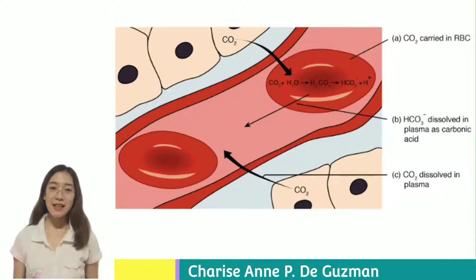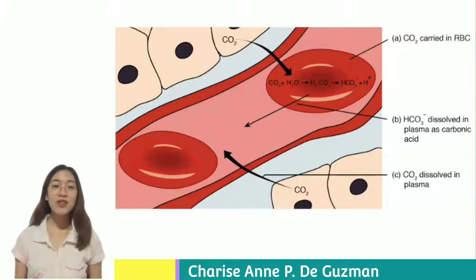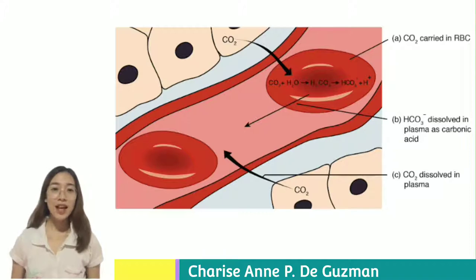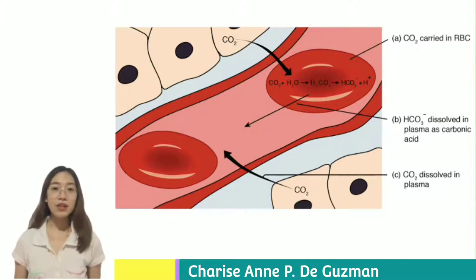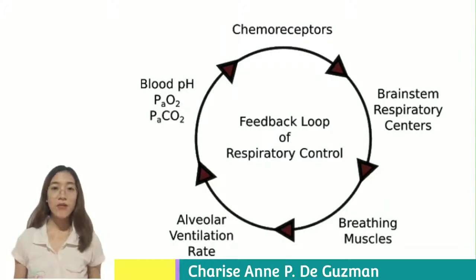Transportation of gases enables oxygen and carbon dioxide to travel throughout the body. Most gases are carried through blood attached to transport molecules such as hemoglobin, although blood plasma also carries a minimal amount. Almost 99% of the oxygen in the human body is transported by hemoglobin. The last physiological role is the homeostatic control of respiration — the body's ability to maintain a steady breathing rate.